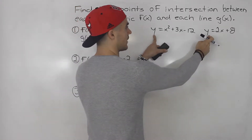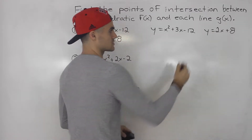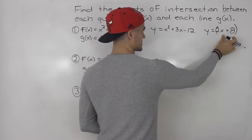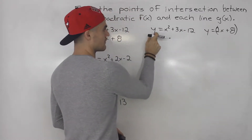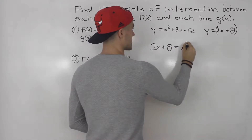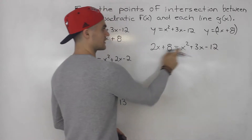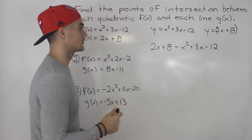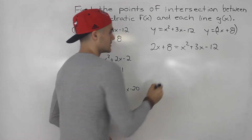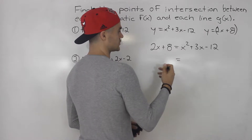You can see when the y values are equal — so you could use substitution. Take the expression for the y value, 2x plus 8, and substitute it in for the y in the quadratic. So you'd have 2x plus 8 equals x squared plus 3x minus 12 — just making the y values equal, seeing at what x value they are equal.